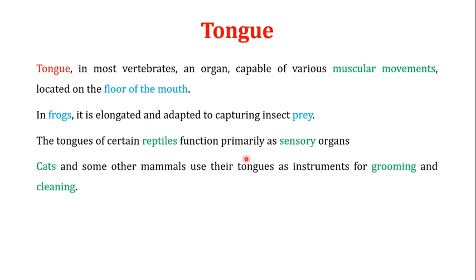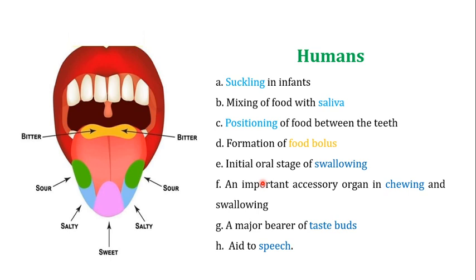The muscular nature of the tongue allows it to elongate, which helps in the capturing of insect prey. Secondly, the tongues of certain reptiles function primarily as sensory organs. Cats and some other mammals use their tongues as instruments for grooming and cleaning. In human beings, the tongue plays a variety of roles. The first important function is helping infants in the process of suckling. The tongue is also responsible for mixing the food with saliva, which helps start the process of digestion.